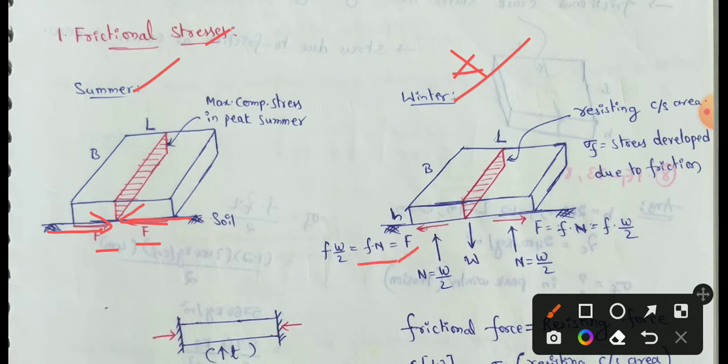F means coefficient of friction, N is the normal force in Newtons. F × N = W/2, so the final formula gives: small f × W/2, where W is the weight of the pavement acting downward and N acts upward.